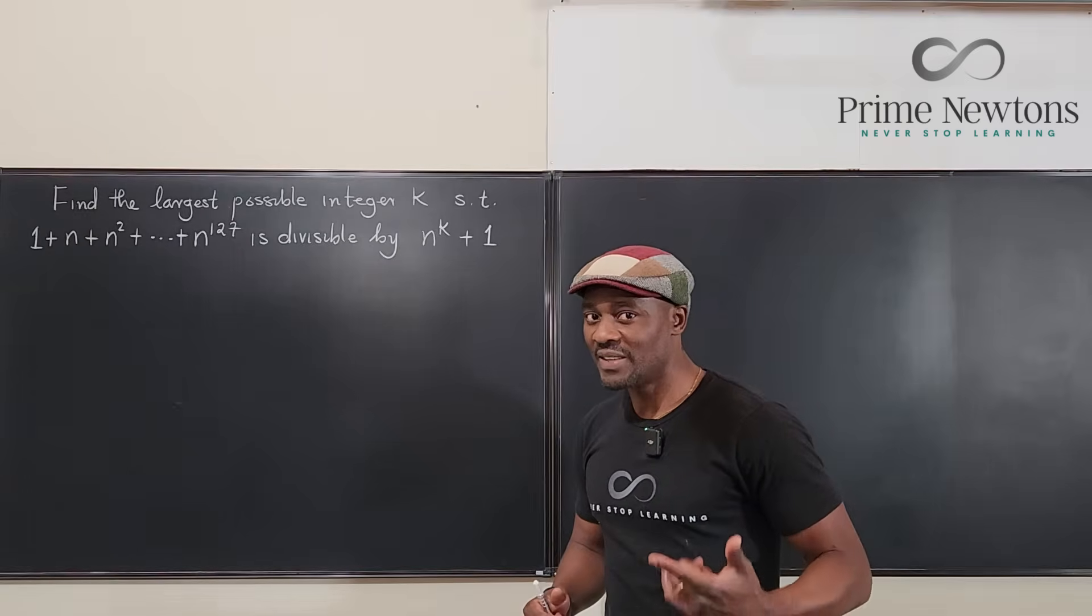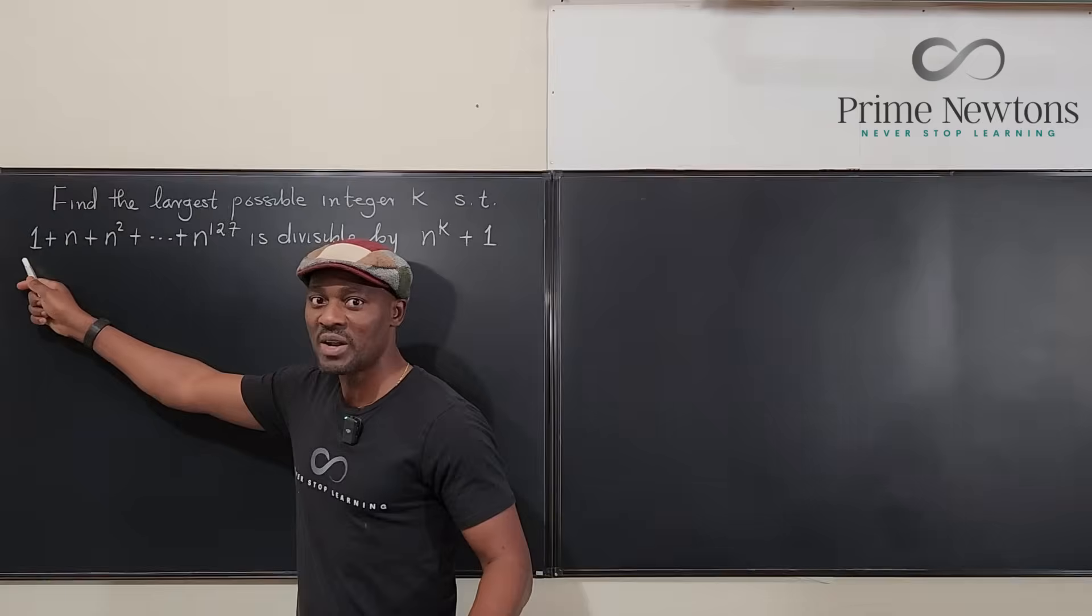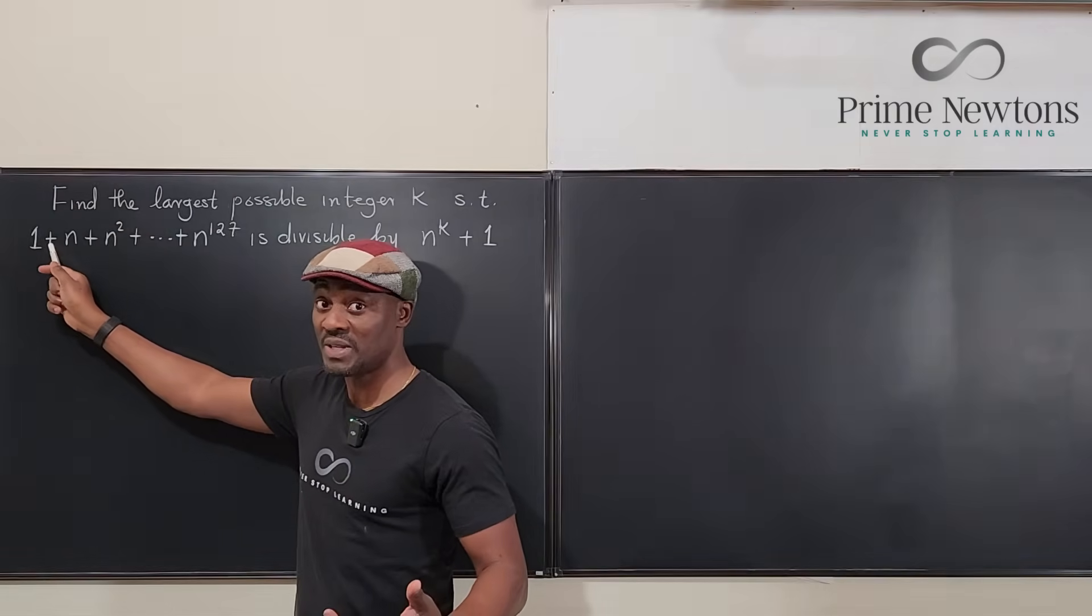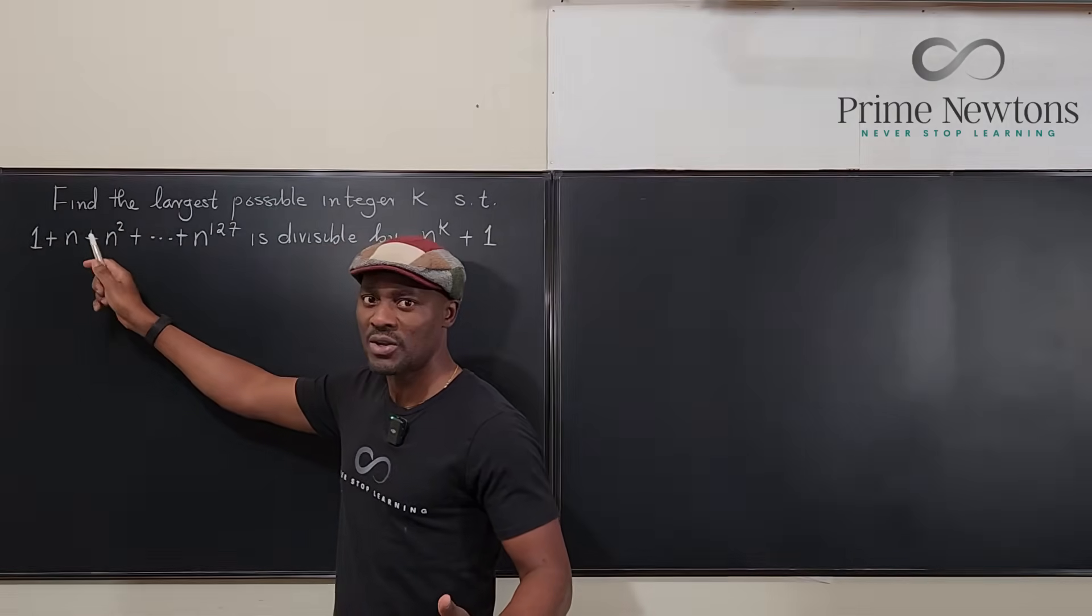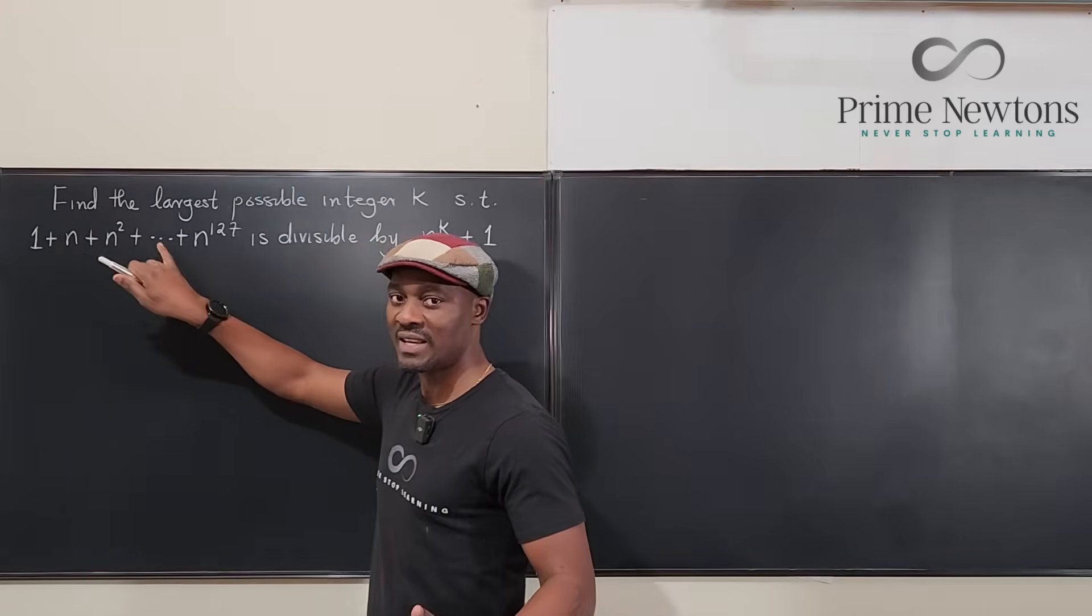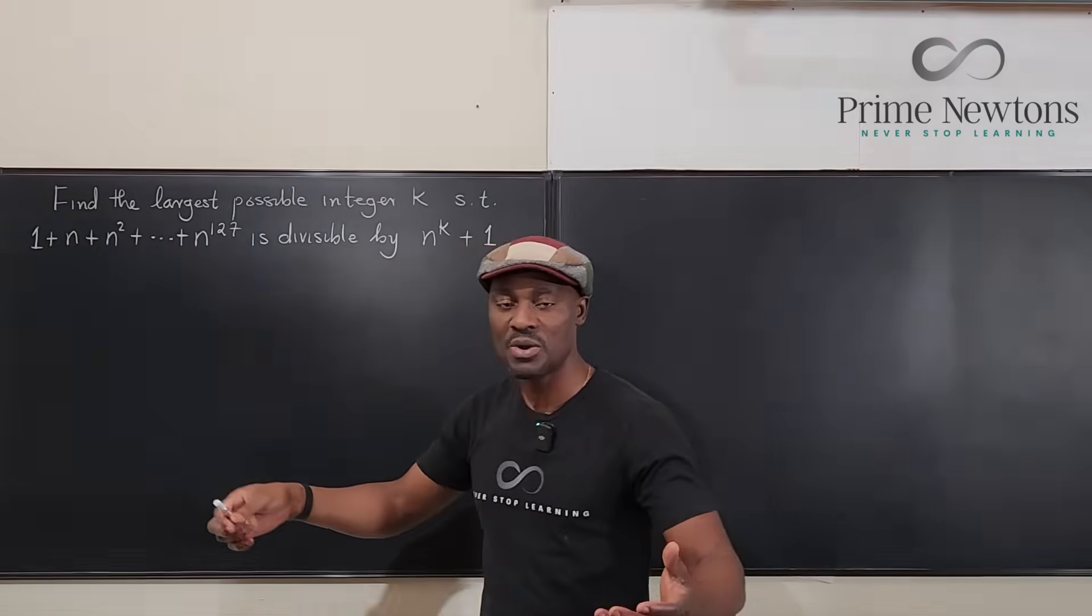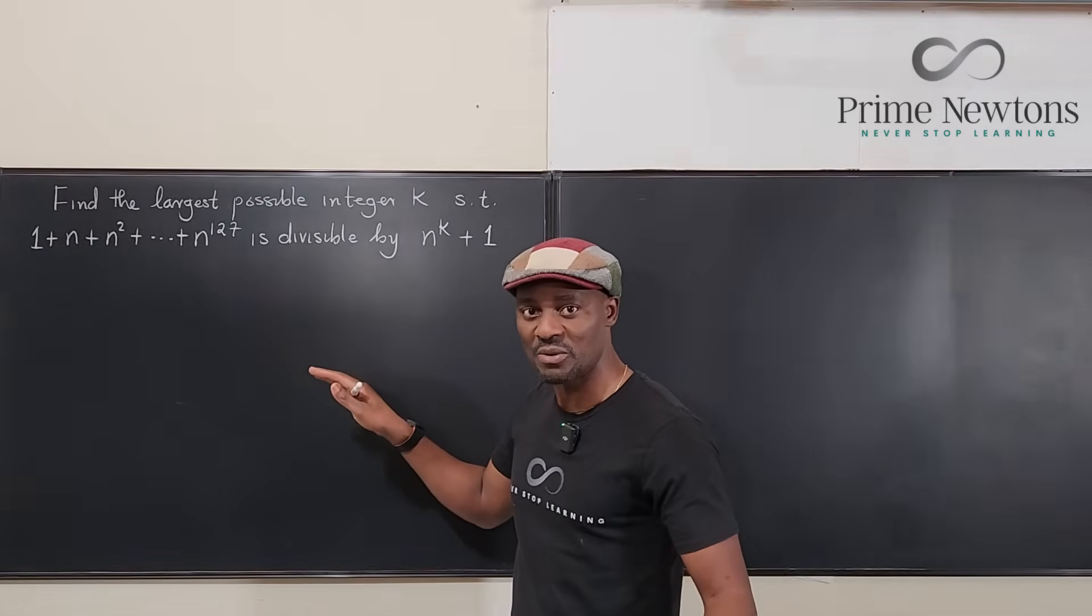So looking at the series, you can see that there's nothing complicated about it. The first term is 1, the next term is n, followed by n squared. Notice that each term is multiplied by n to get the next term. So it looks like we have a common ratio of n. This must be a geometric series.